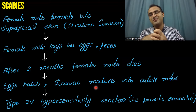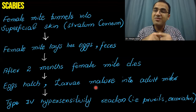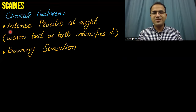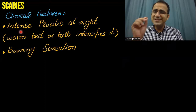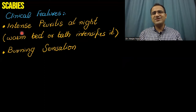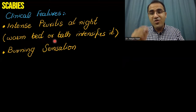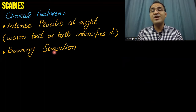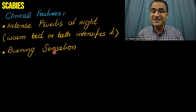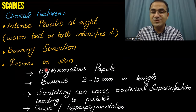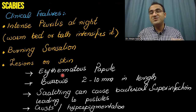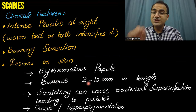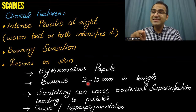There will be excoriation where the female mite is tunneling, and severe pruritus. Clinical features include intense pruritus especially at night — a warm bed or warm bath intensifies the itching. There will be a burning sensation where the mite is burrowing, erythematous papules due to inflammation, and burrows 2 to 10 millimeters in length.